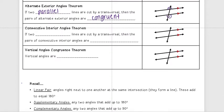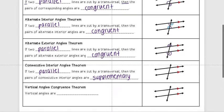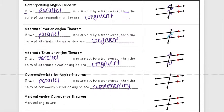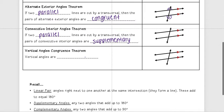Here's where it gets a little different. The Consecutive Interior Angles Theorem says if two parallel lines are cut by a transversal, then the pairs of consecutive interior angles are supplementary. So in the first three cases — corresponding angles, alternate interior angles, and alternate exterior angles — those are all congruent with equal measure. The only one that's different is consecutive interior angles; those are supplementary. So if this was angle one and angle two, that means the measure of angle one plus the measure of angle two equals 180.